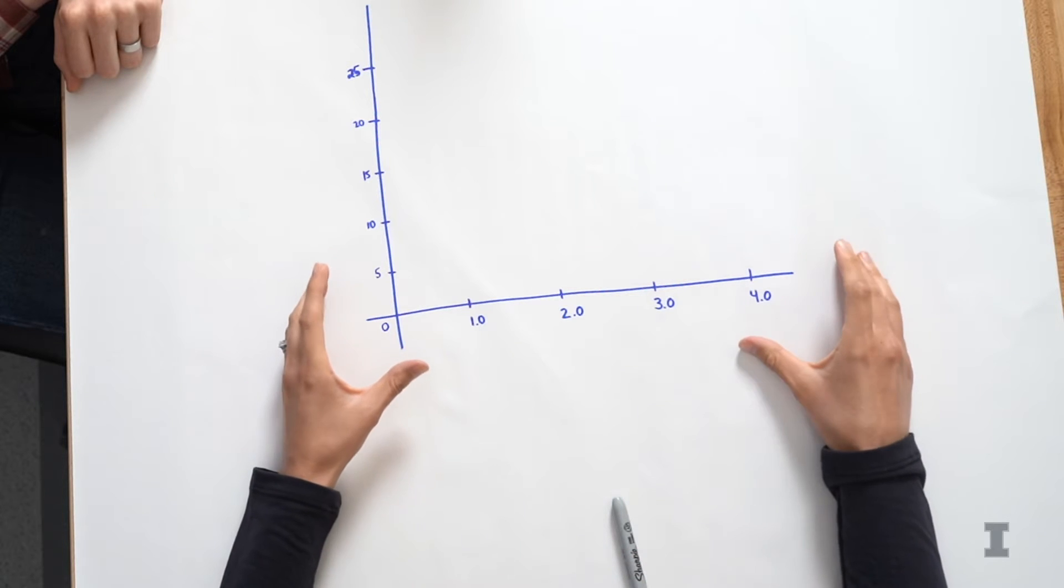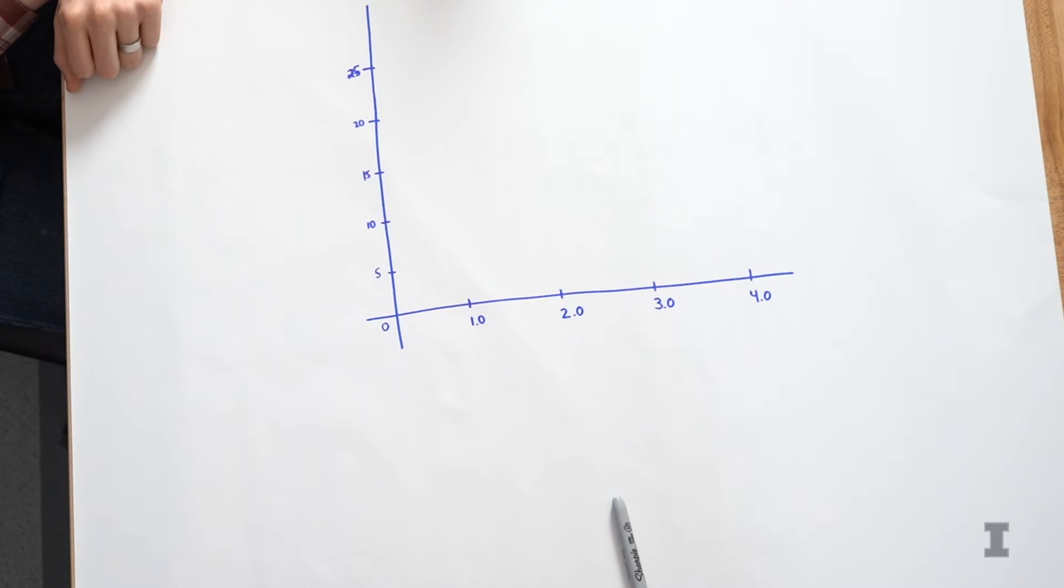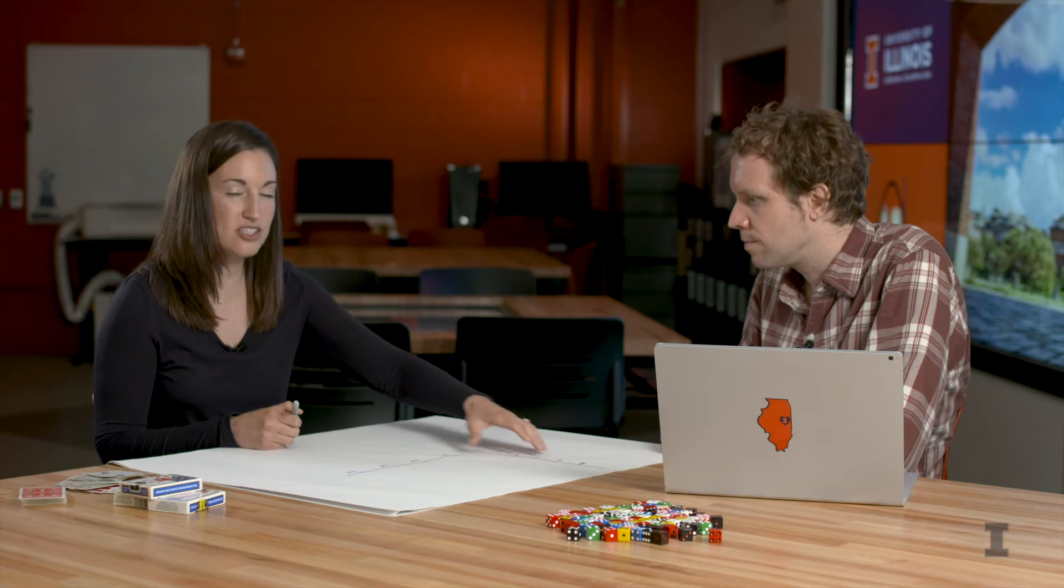So I am going to, I have this x and y axis here for the histogram. And I'm actually going to label both of these before I start drawing.